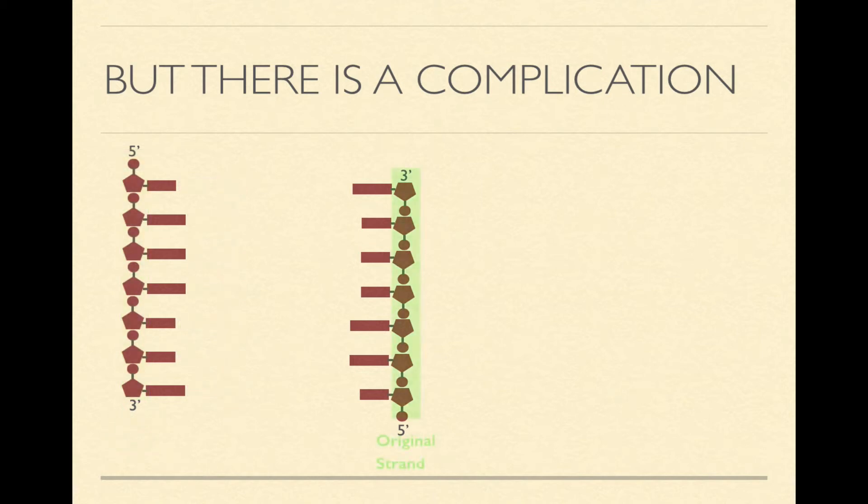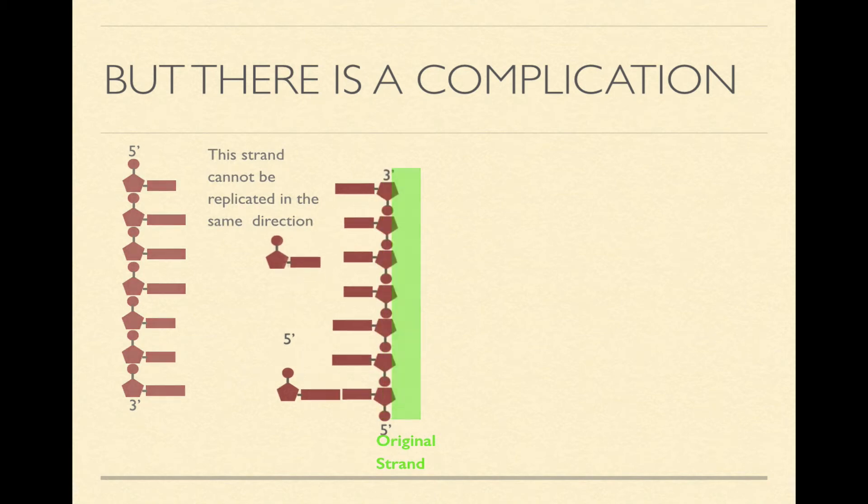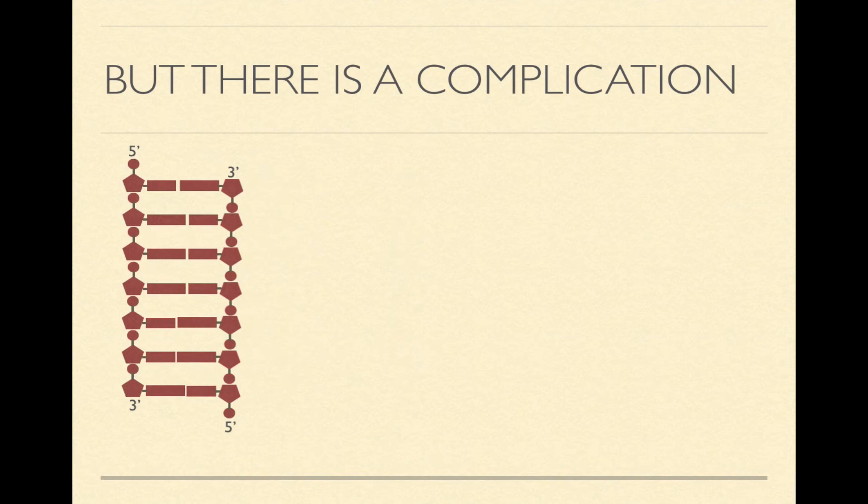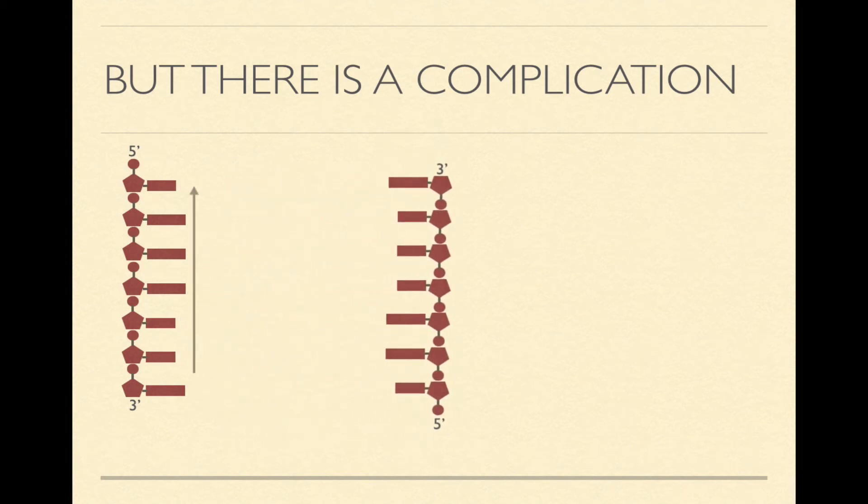But on the other side, the other original strand, remember, we can't build going up, because new nucleotides cannot bond to the open 5' end here. It's in the wrong direction. So this strand cannot be replicated in the same direction as the other strand.